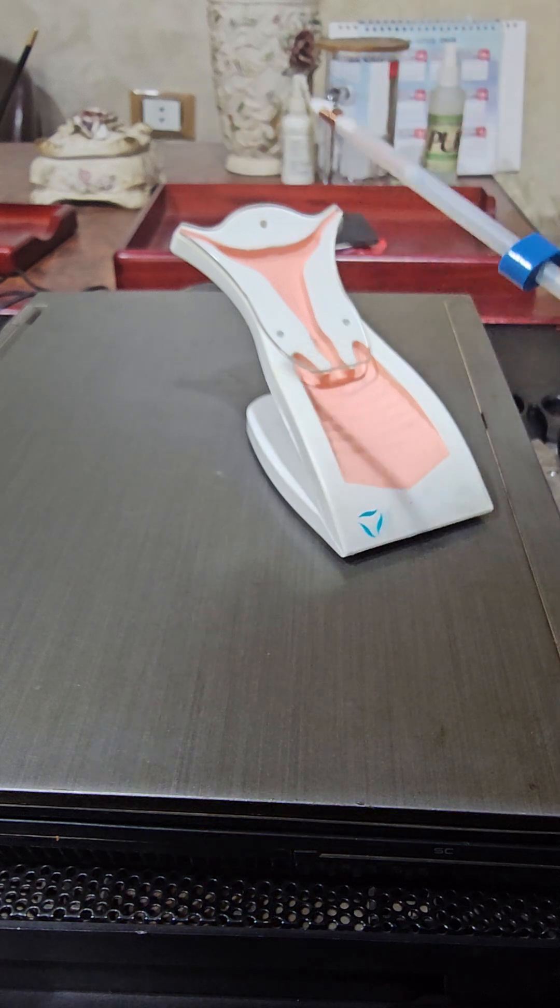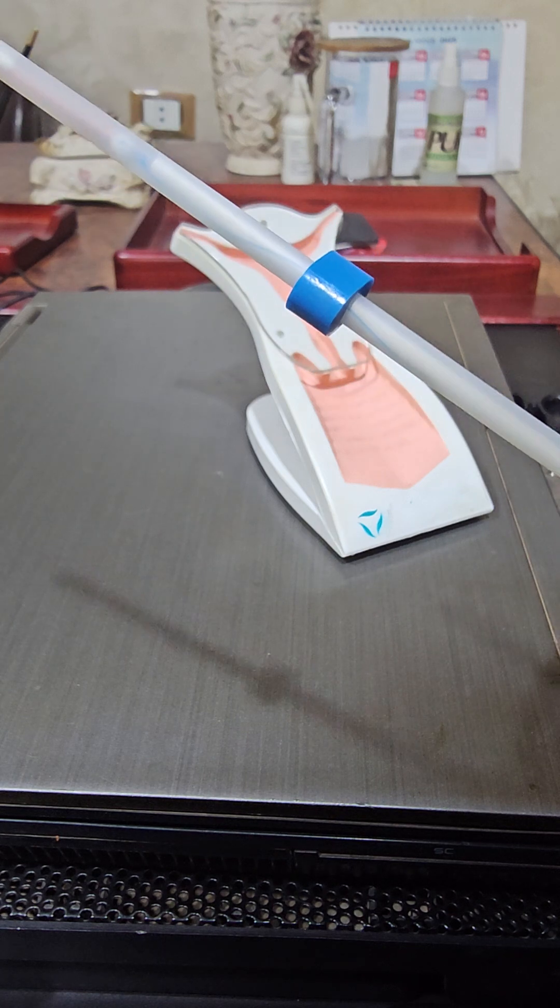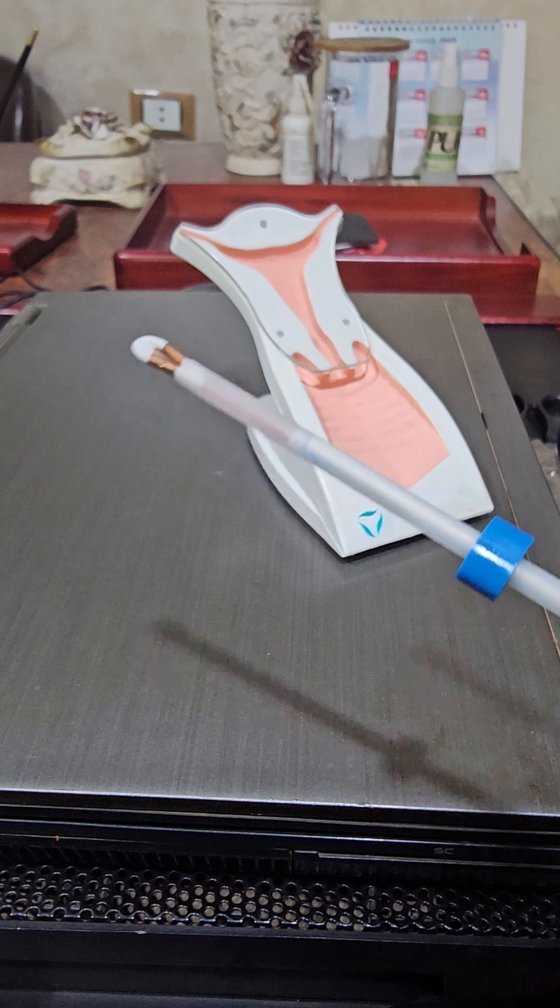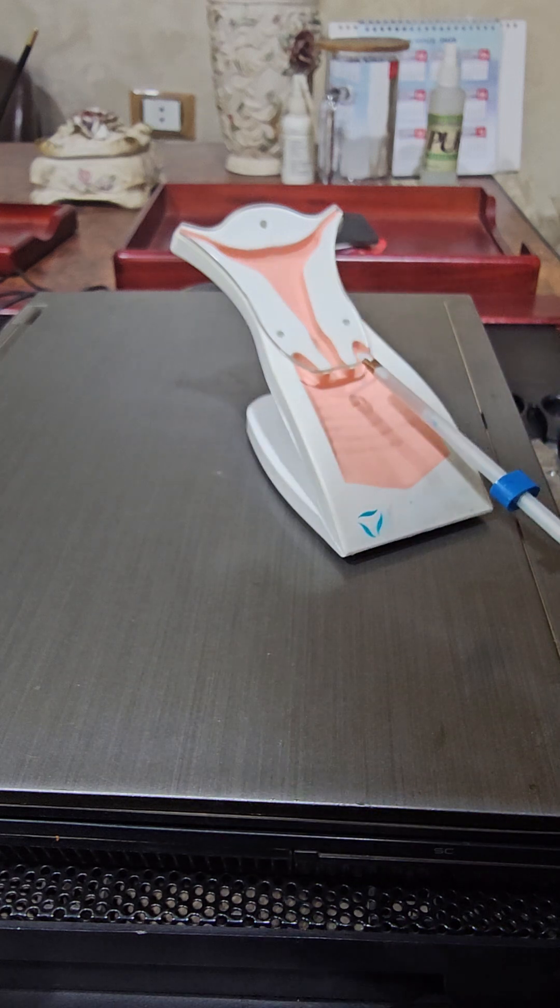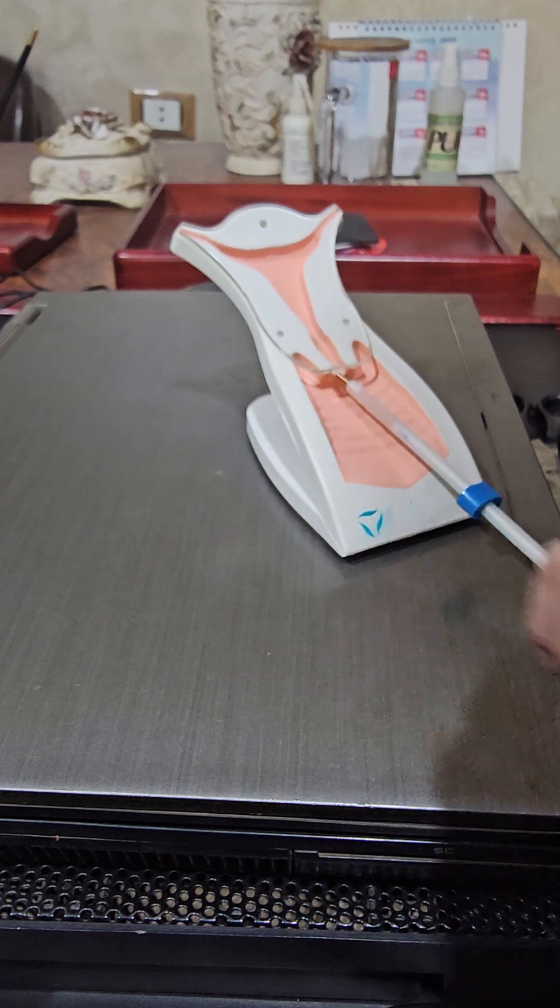We are going to use the withdrawal technique. First, push the plunger till it meets the lower end of the vertical arm like that. Then, we are going to do the insertion using withdrawal technique like that.